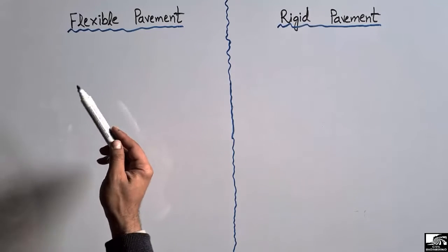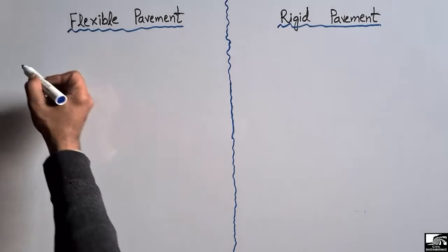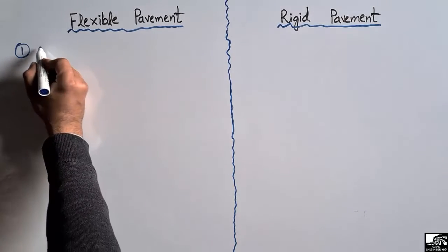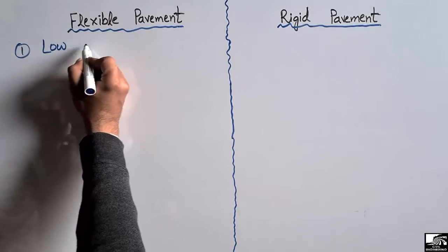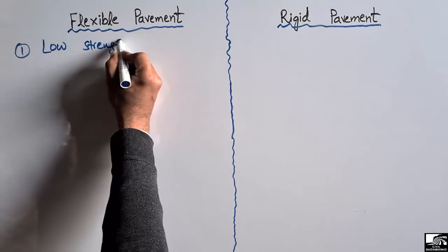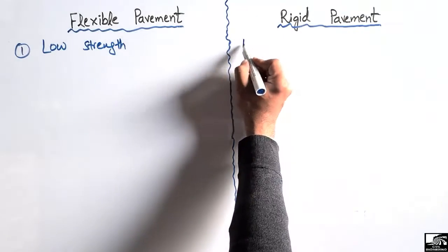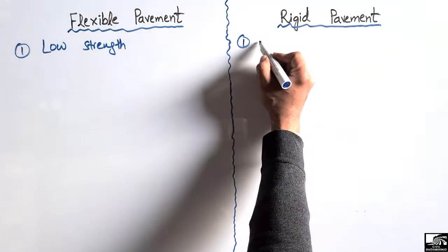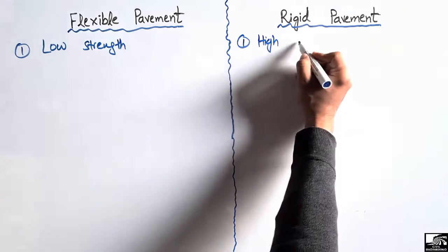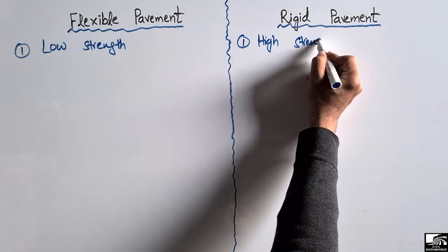The first difference is that flexible pavement has low strength. It always has lower strength in comparison to rigid pavement, while rigid pavement always has the higher strength in comparison to flexible pavement.